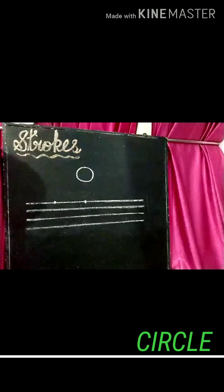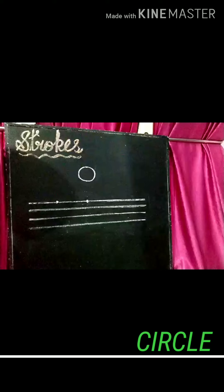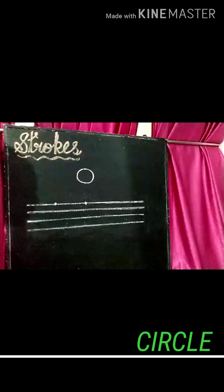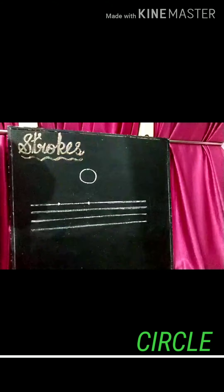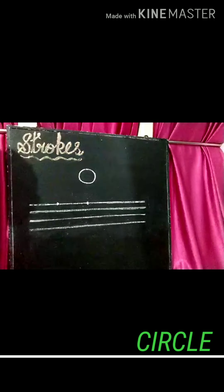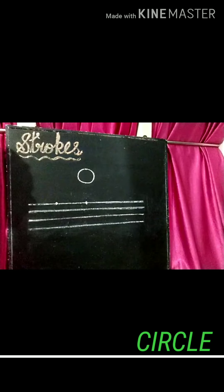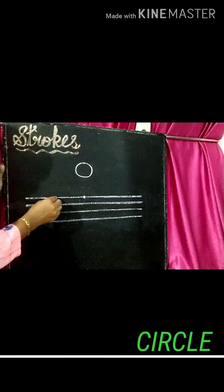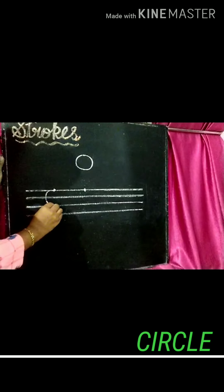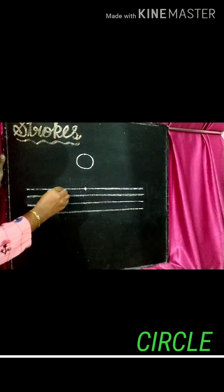Then I will show you how to write circle in four lines. First, let's draw a circle by a single dot. Start circle from the dot. Draw open curve and go up and join in the same dot.